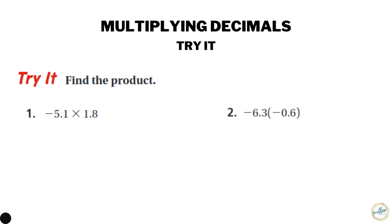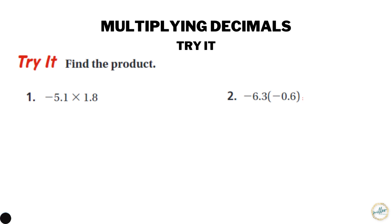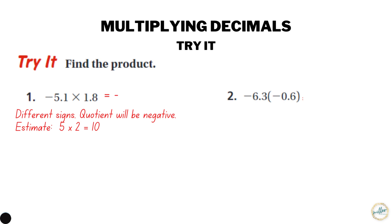Now it's time for you to try it. Pause the video and try the two problems, then start the video back up to see how you did. For number one, we have a negative times a positive, so we know the answer has to be negative. Let's estimate: 5.1 is close to 5 and 1.8 is close to 2, so 5 times 2 equals 10. First we multiply 5.1 times 8 and get 408.